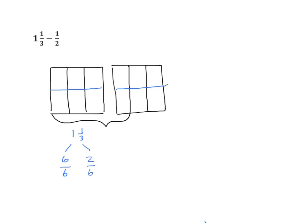So what we're going to do this time is take from the whole — take from the 6 sixths. I'm going to write the 6 sixths over here once again so that we have room to work. So what is 1 half? If we look at either one of our diagrams, 1 half consists of 3 sixths. So I'm going to cross out 3 sixths. So I have 6 sixths minus 3 sixths equals 3 sixths. We have our 3 sixths left over from our whole, but we still have some parts of our original number not crossed out. So we have our 3 sixths plus our 2 sixths, and that equals 5 sixths.